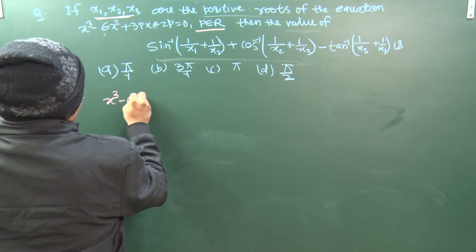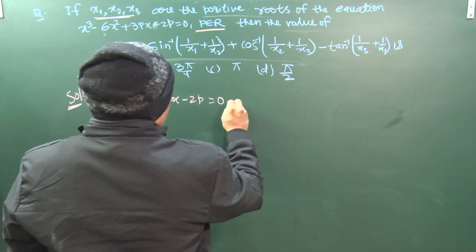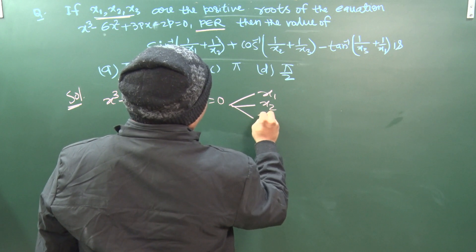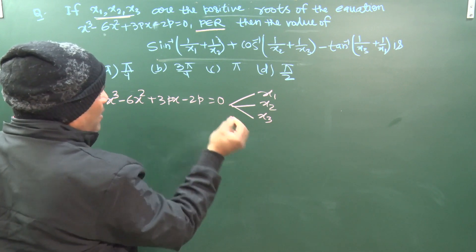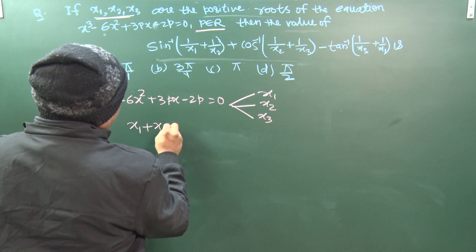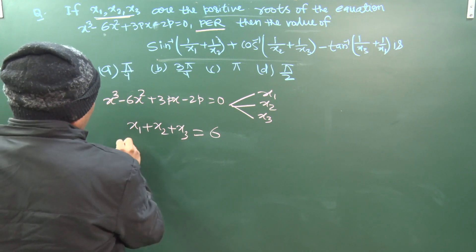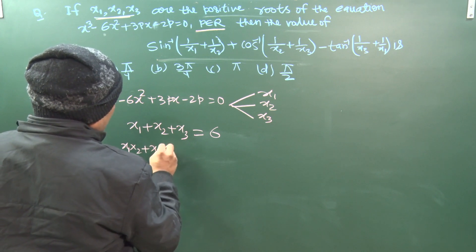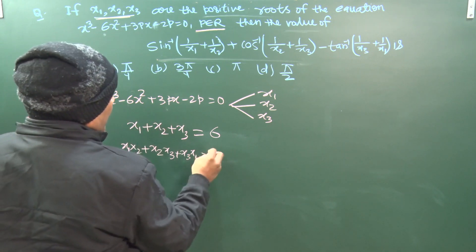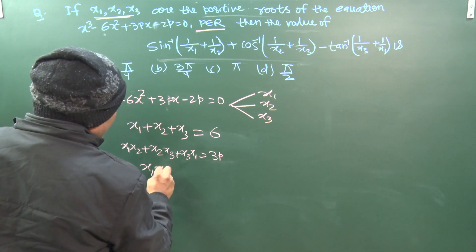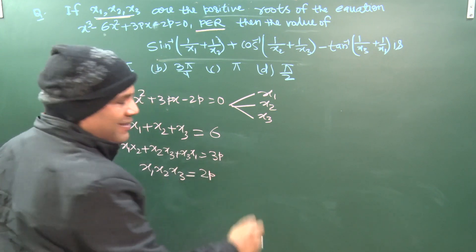For the cubic equation x³ - 6x² + 3px - 2p = 0, the equation has 3 roots. Using Vieta's formulas: x1 + x2 + x3 = -b/a = 6; x1·x2 + x2·x3 + x3·x1 = c/a = 3p; and x1·x2·x3 = -d/a = 2p.